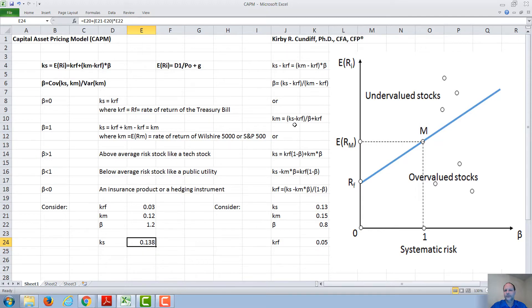You could also solve for Km: Ks minus K risk-free over beta plus K risk-free. Or you could solve for the risk-free rate itself, which would be Ks minus Km times beta over 1 minus beta.